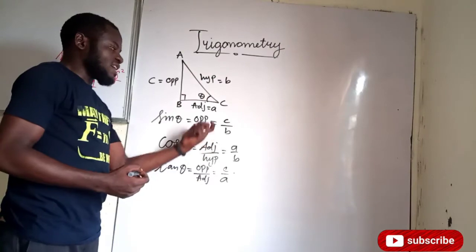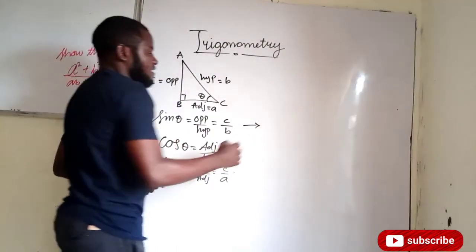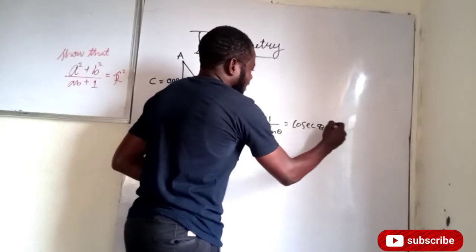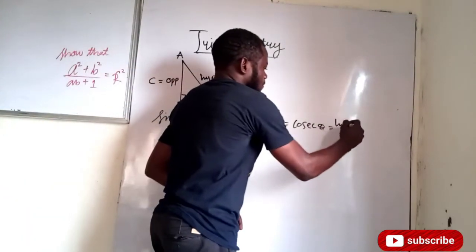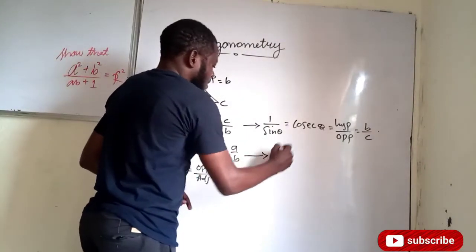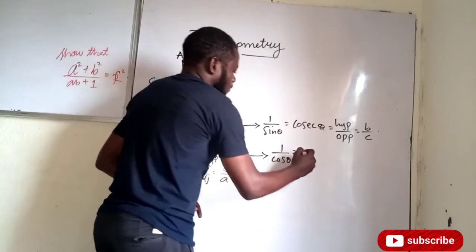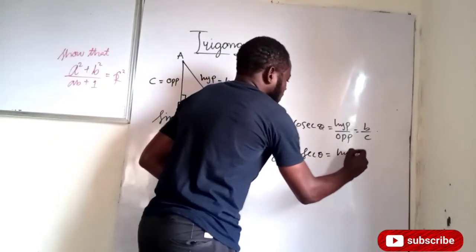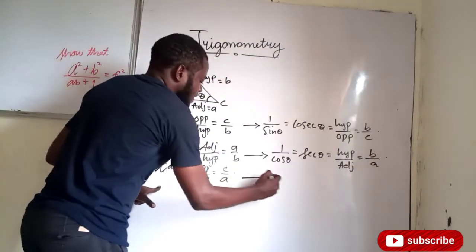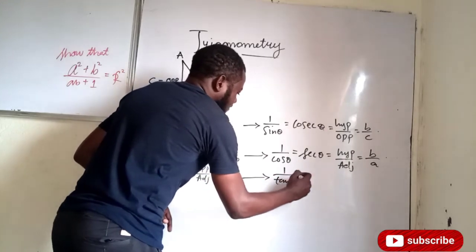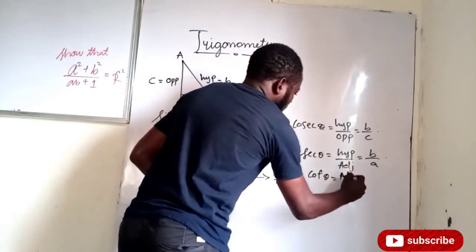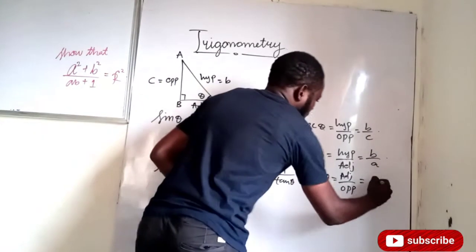Now all these ratios have their reciprocals. The inverse of sine is 1 over sine of theta, which gives us cosecant of theta — that is hypotenuse over opposite, so B over C. The inverse of cosine is 1 over cos theta, which gives us secant of theta — that is hypotenuse over adjacent, so B over A. The inverse of tangent is 1 over tangent, which gives us cotangent of theta — that is adjacent over opposite, so A over C.